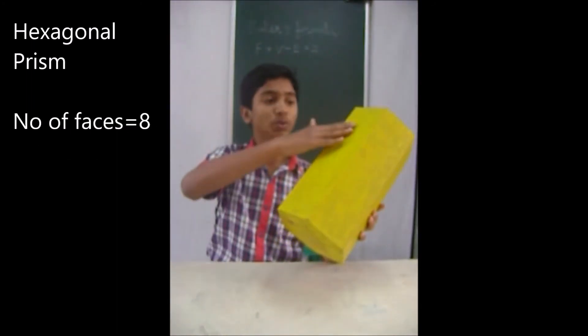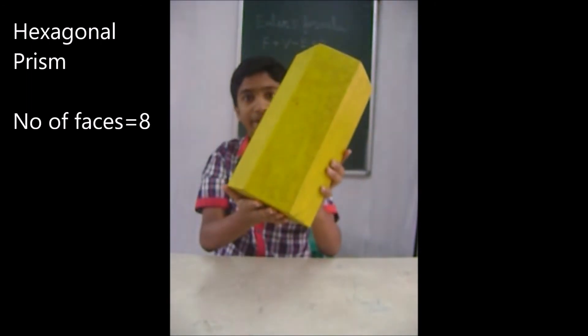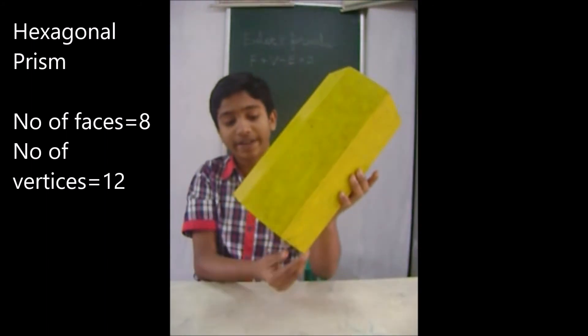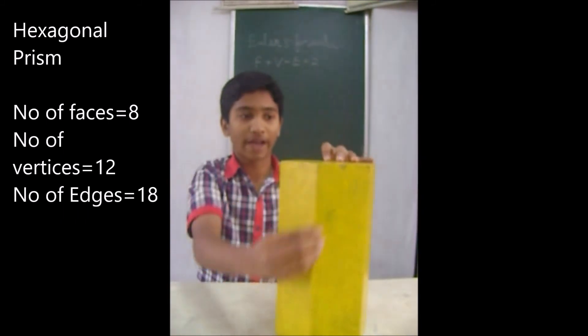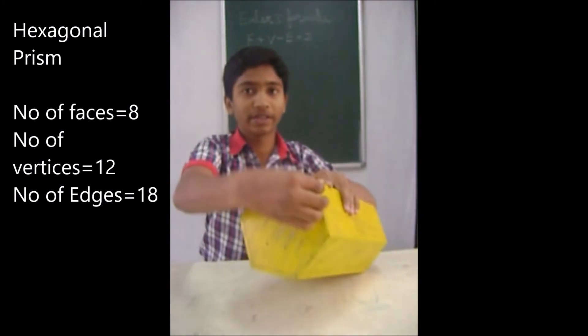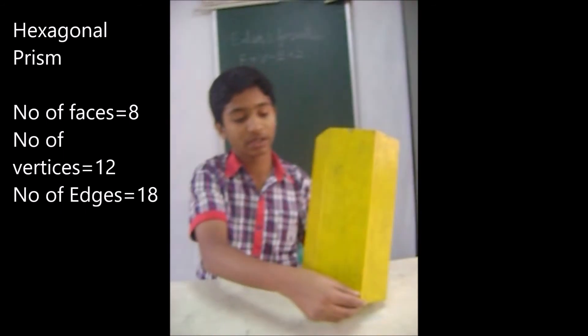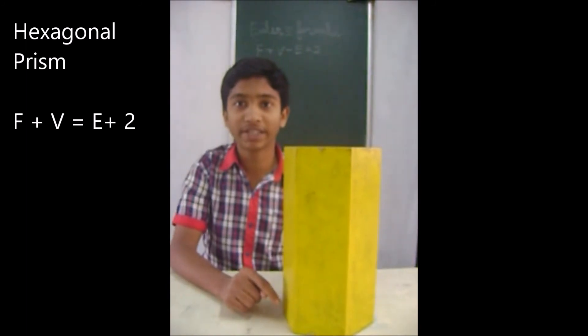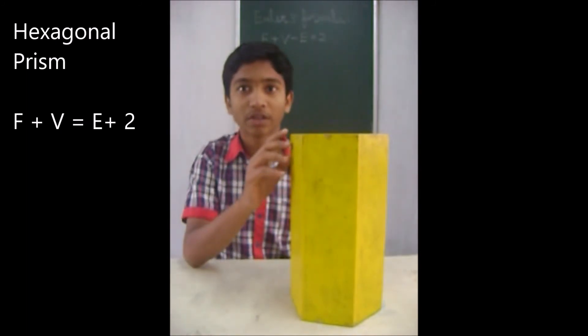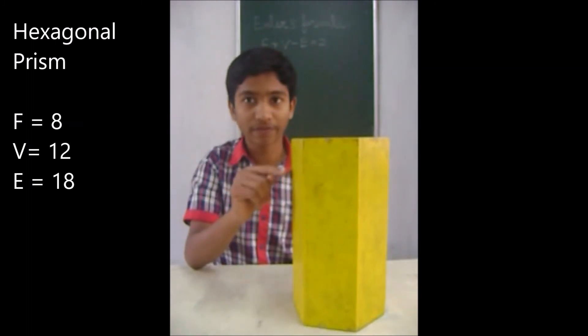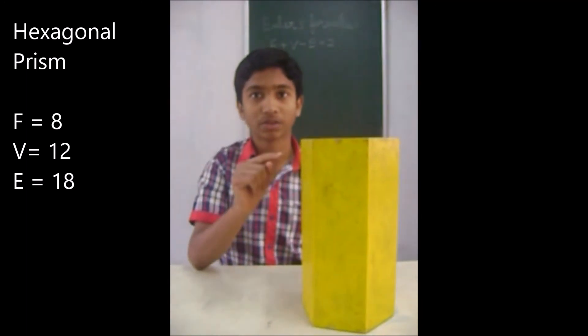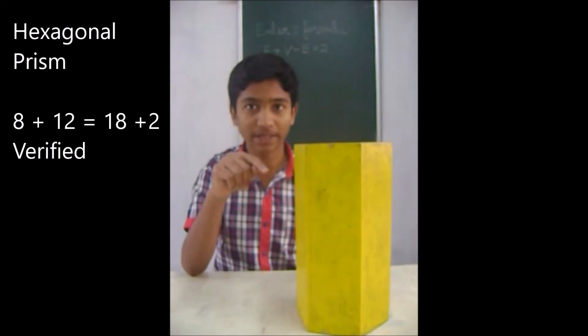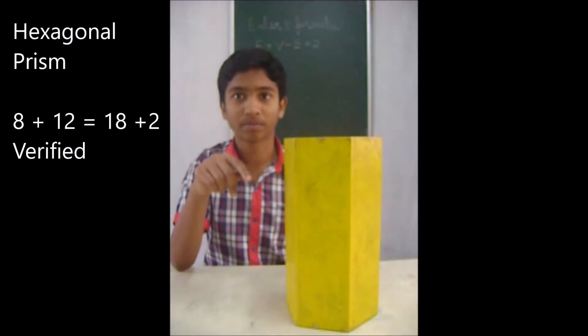This is the hexagonal prism. It has 8 faces. It has 12 vertices — 1 through 12. It has 18 edges — 1 through 18. According to Euler's formula, F plus V equals E plus 2. F equals 8, V equals 12, and E equals 18. So 8 plus 12 equals 18 plus 2, that is 20 equals 20. Verified.